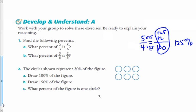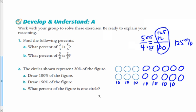The next problem says the circles shown represent 30% of the figure. Draw 100% of the figure. Well, if this is 30%, I'm going to think that that's 10 three times, right? So each of those are 10%. Now to get 100%, I need 10 tenths. So I'm just going to draw: 10, 20, 30, 40, 50, 60, 70, 80, 91. Now that's 100%.